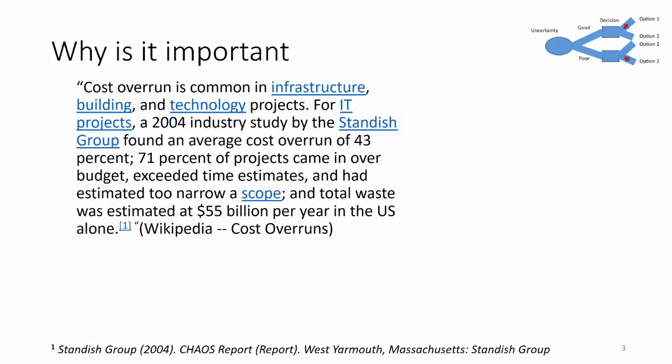So why is it important? Cost overruns are common in all kinds of projects. A 2004 study found an average cost overrun of 43%. 71% of the projects came in over budget, exceeding time estimates and an estimated too narrow a scope. The total waste was approximately $55 billion per year in the U.S. alone.